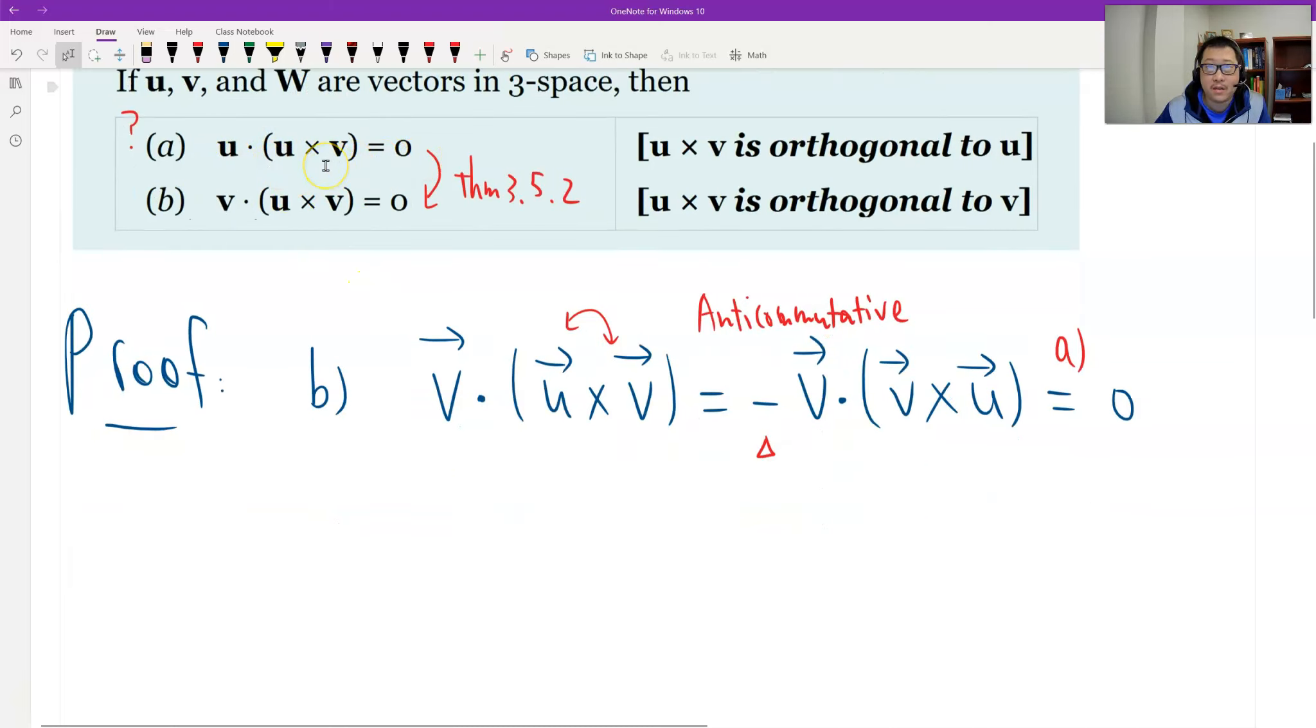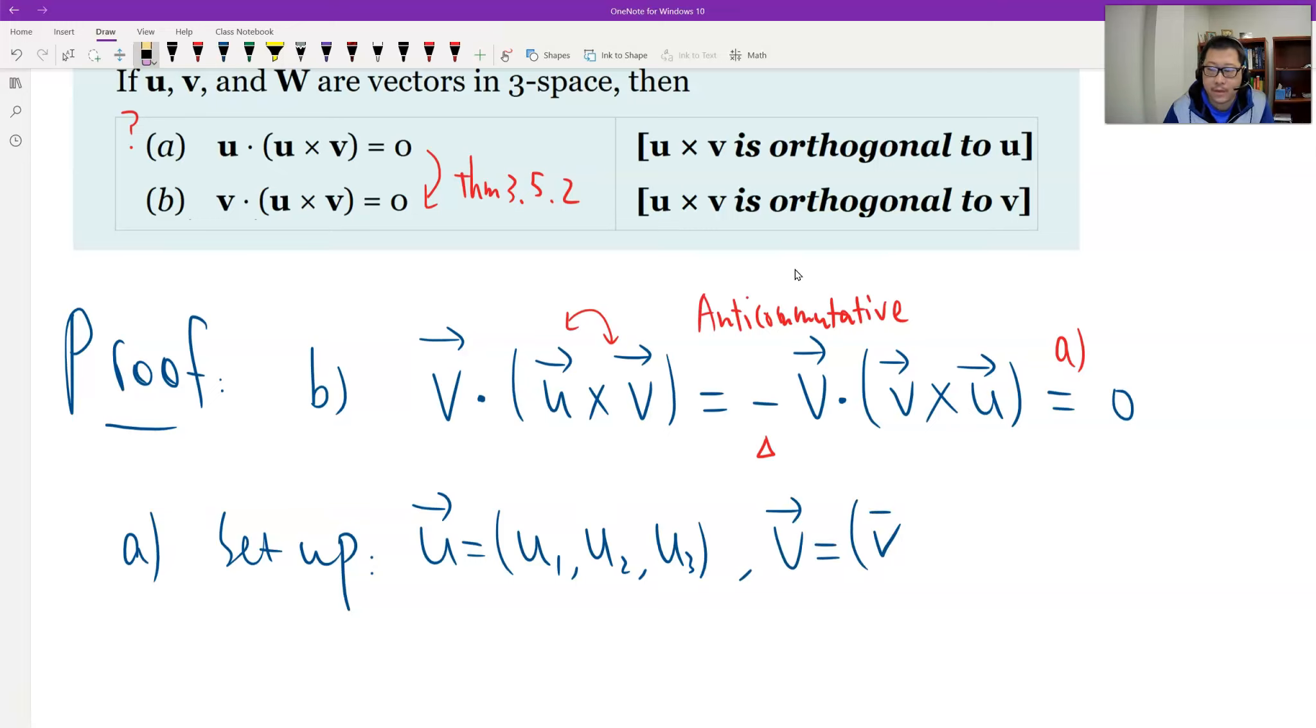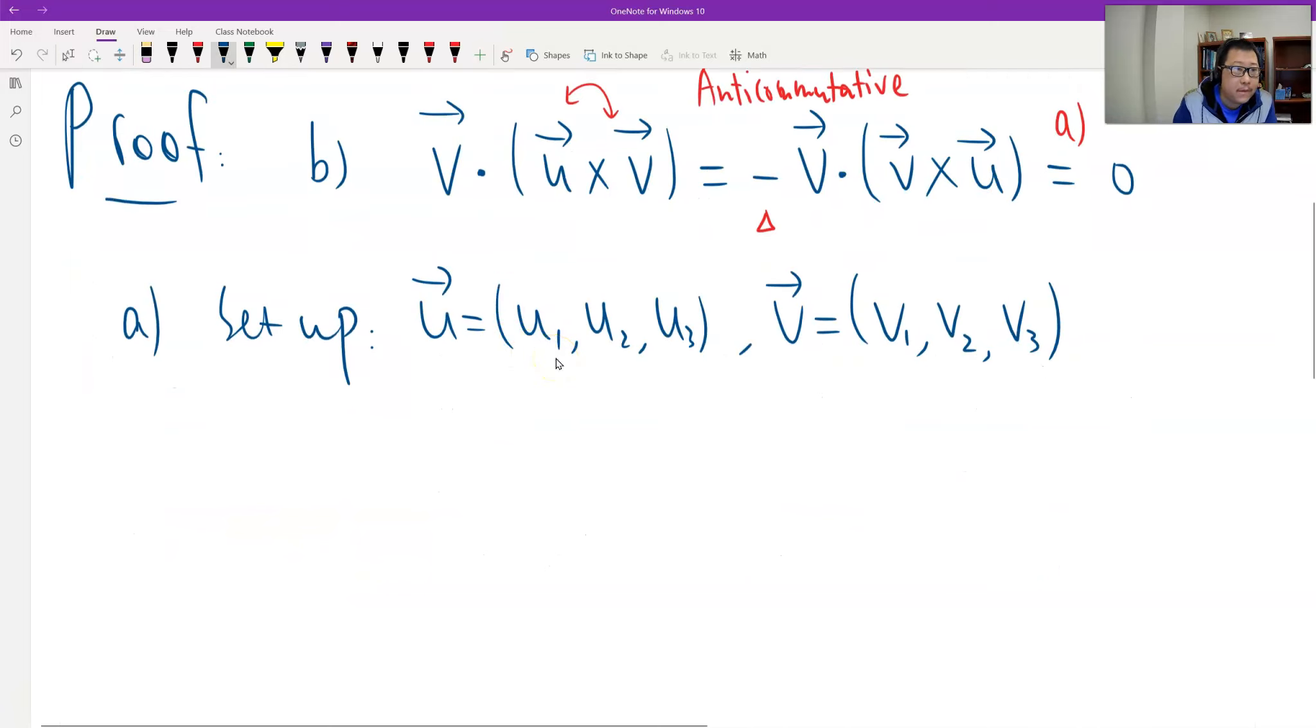Now let's verify why a is true. This time we definitely need to do calculation because we know the definition of the cross product and then we know the definition of the dot. First, look at a. Let's set up u is this vector: u1, u2, u3. And then v vector is v1, v2, and v3. This is in three space because the cross product is defined in three space only.